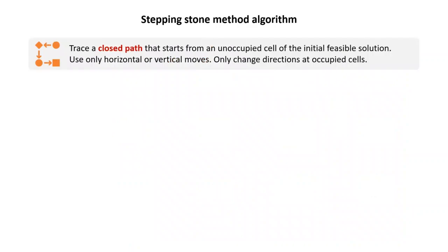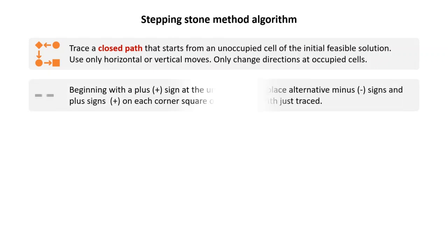To summarize the algorithm: the starting point is to trace a closed path starting from each unoccupied cell, stepping on stones — meaning changing direction only at occupied cells. You are only allowed to use vertical and horizontal movements; diagonal directions are not allowed. You can only change direction at occupied cells. Then, at the corners of the closed path where you change direction, you place either a plus or minus sign on the small square with the unit costs.